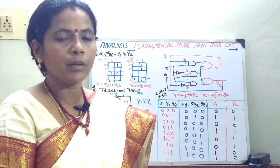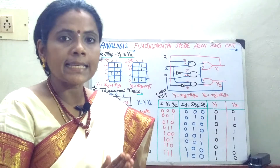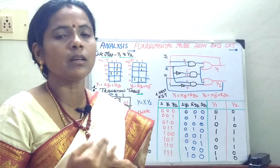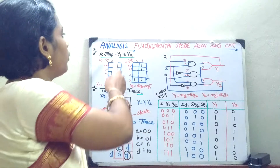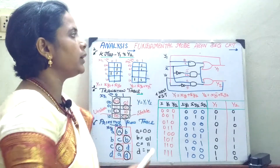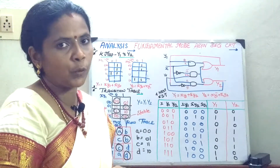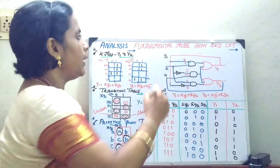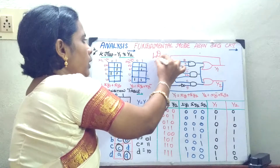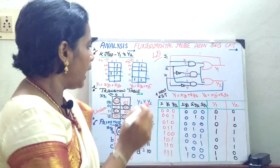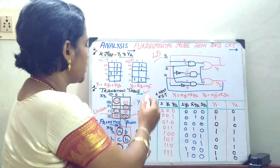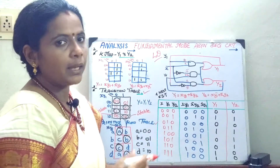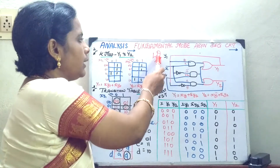In the last session, we have seen what is asynchronous sequential circuit, what are its classifications, and what is the difference between the two. In today's session, we will do analysis on the fundamental mode asynchronous sequential circuit. The problem is they would have given the logic diagram. Given the logic diagram, they will ask you to frame your transition table and your primitive flow table. What are the steps involved from the logic diagram?